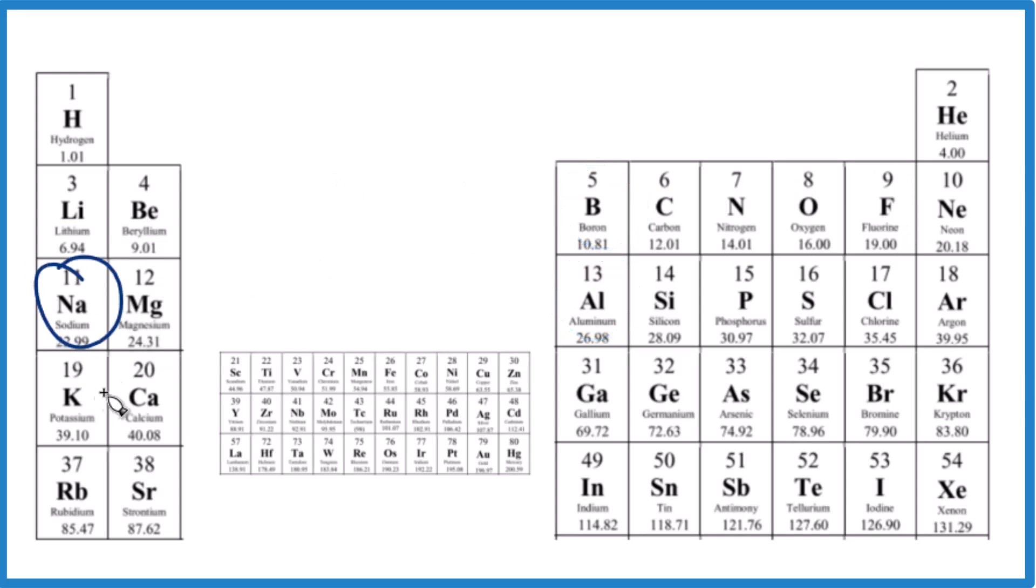How about sodium and potassium? As we move away from fluorine down a group, it becomes less electronegative. So potassium is less electronegative and it's further from fluorine.